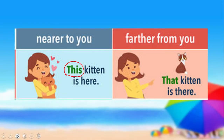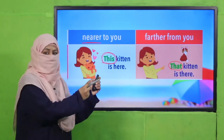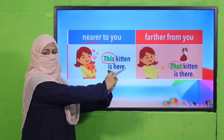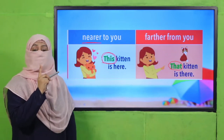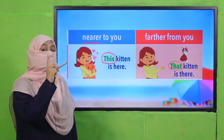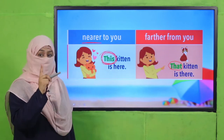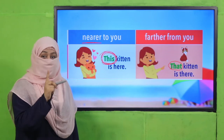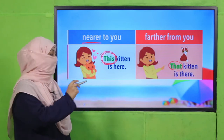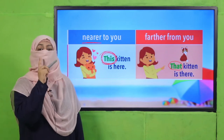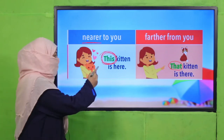This kitten is here — we use 'this' when something is near to us. That is a kitten — we use 'that' when something is further from us. In both cases the object we are pointing to is one — singular. So 'this' is a pointing word for one singular thing closer to us, and if one thing is closer we say 'this.'